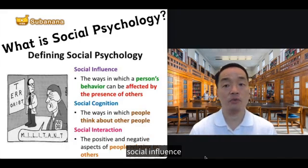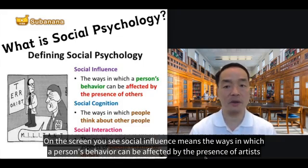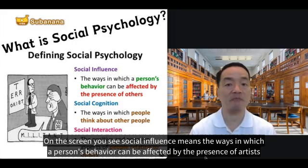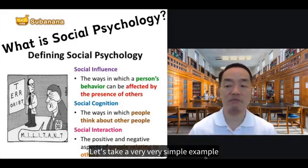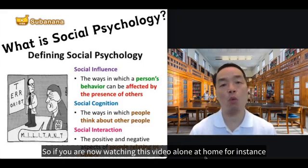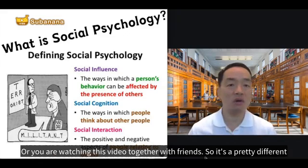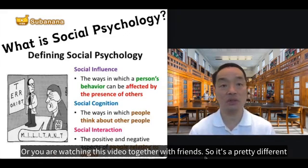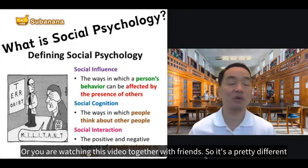First, social influence. Social influence means the ways in which a person's behavior can be affected by the presence of others. Let's take a very simple example. If you are now watching this video alone at home, or you are watching this video together with friends — this is pretty different.